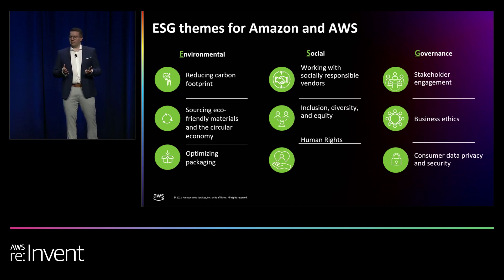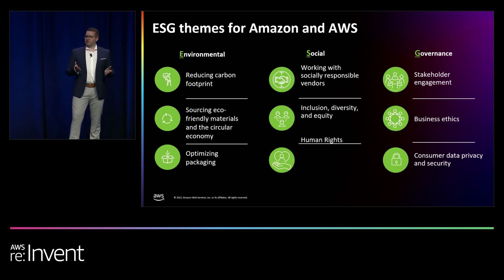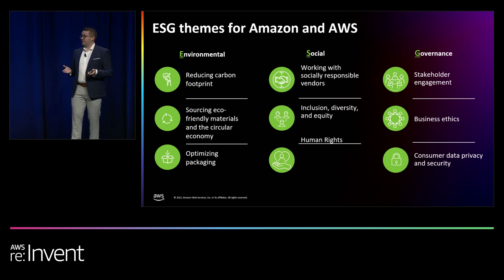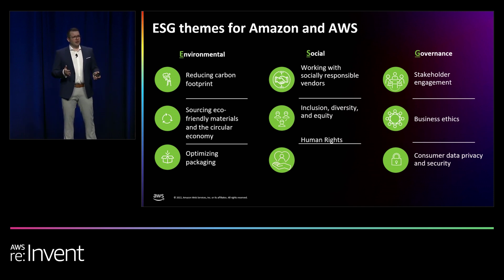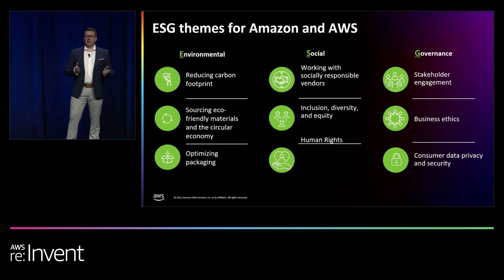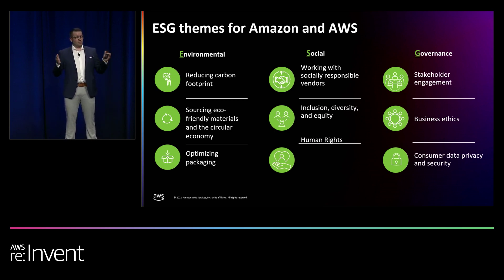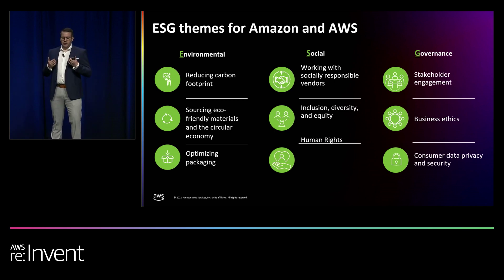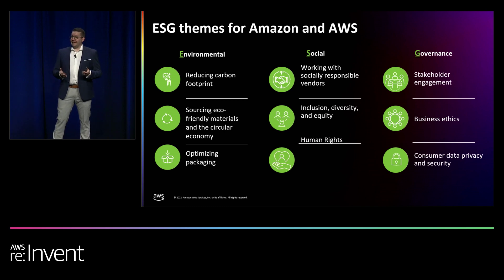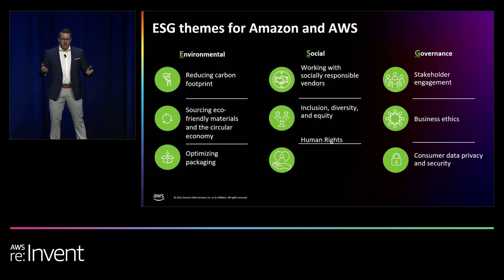Amazon's ability to innovate on behalf of our customers relies on perspectives and knowledge from people with all backgrounds. In 2021, we had a 70% increase of Black directors and vice presidents, and over 100,000 Amazon employees participate in Amazon's Affinity Groups, which bring together employees across countries and businesses. Amazon also works to earn customer trust in how we collect, use, and share customer data, and offers cybersecurity awareness training free to customers.